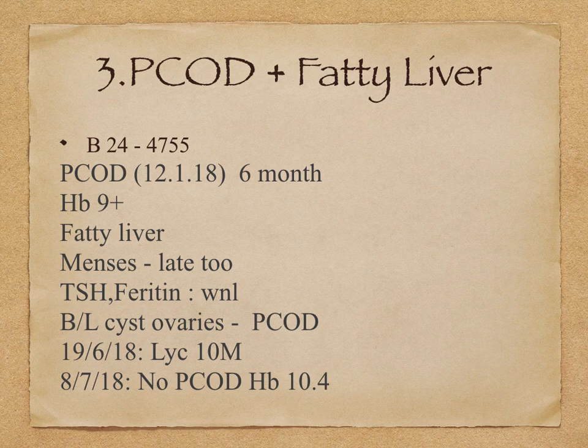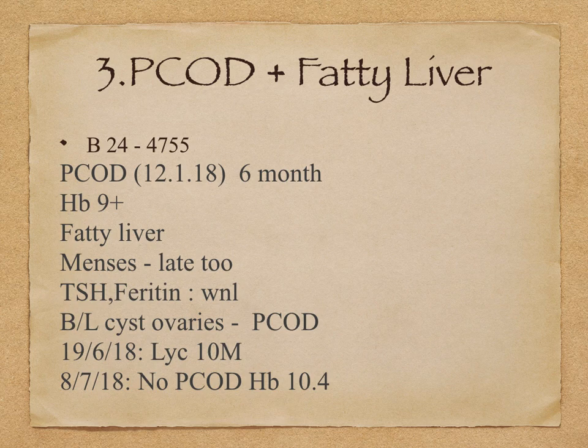Another case of PCOD plus fatty liver — polycystic ovarian disease plus fatty liver. The age of the patient is 24, with this complaint for the last 6 months. The hemoglobin level is only 9. On USG: fatty liver, menses is late — late by one or two months. TSH and ferritin levels are within normal limits. On USG: bilateral polycystic ovaries.